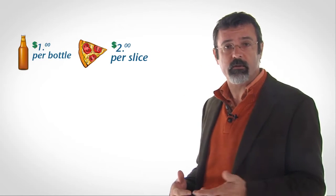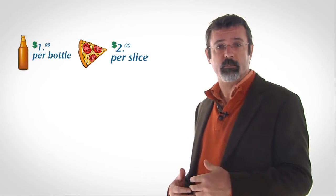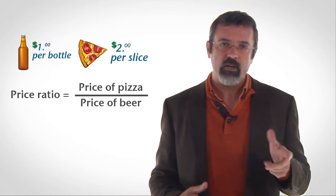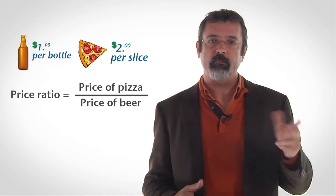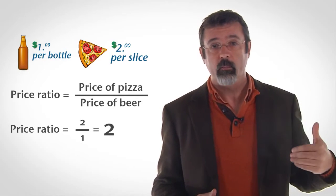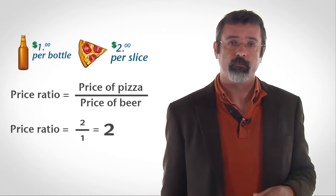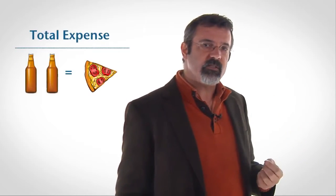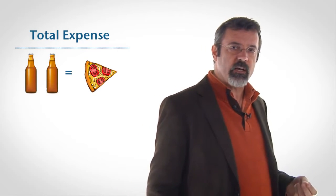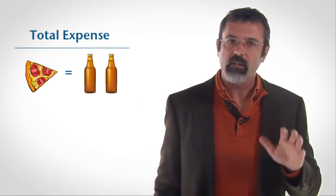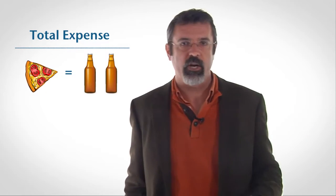For example, suppose the price of beer is one dollar and the price of a slice of pizza is two dollars. The price ratio is the price of pizza divided by the price of beer, or two divided by one, or two. A price ratio of two means that you could exchange two beers for one pizza and your total expense would not change.